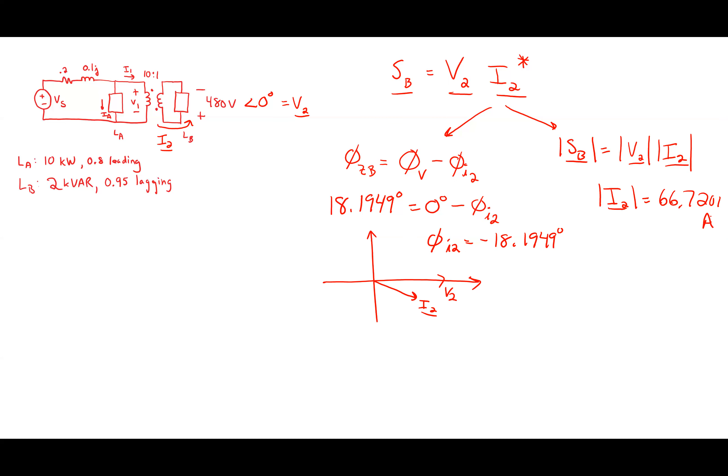Using the magnitude relationship, |I2| equals 66.7201 amps. That's Load B's current. Now I apply the same approach for Load A. S_A equals V times I_A-conjugate. Load A is on the primary side, so the voltage across it is V1.